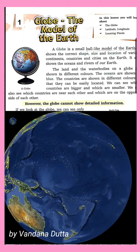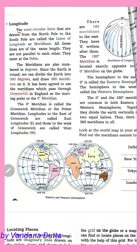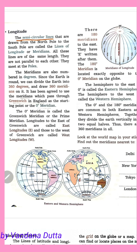Today we will discuss about longitude. The semi-circular lines — semi means half — these are semi-circular lines that are drawn from the North Pole to the South Pole.